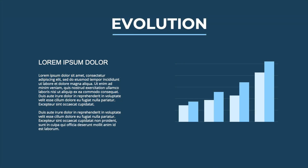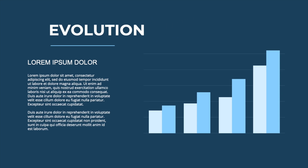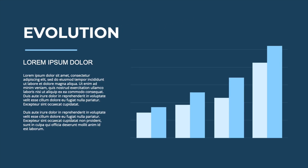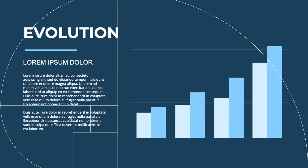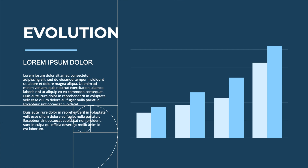Another thing I often see is that graphs and text are equally balanced. What I would do in this case is increase the graph so it applies to the 1.618 ratio of the Fibonacci sequence, or of your slide, and it gets the attention that it really deserves.